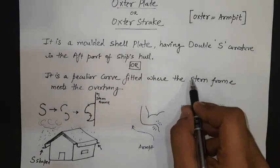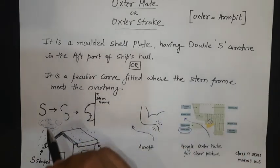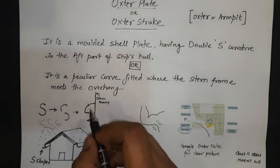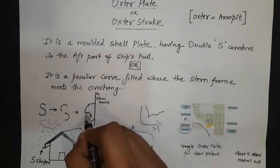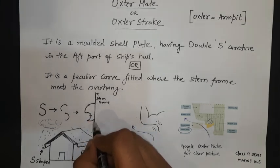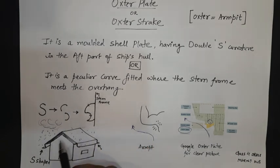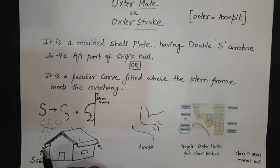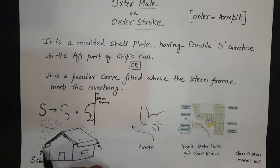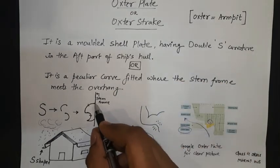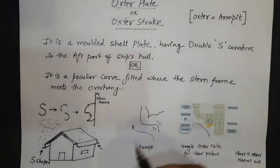It is connected to the stern frame, which is in the aft. The S shape breaks into two curves — the oxter plate looks like this, making two peculiar curves connecting the stern frame in the aft of the ship. Also, the S shape is like what we make in houses on balconies to prevent water from entering. Similarly, this S plate connects the stern frame and it is a double S curvature.